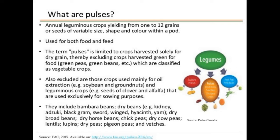Pulses can be used both as food as well as feed. The term pulses is not limited to crops harvested solely for dry grains, thereby excluding crops harvested green for food like green peas and green beans, which are classified as vegetable crops. Also excluded are crops mainly used for oil extraction like soya beans and groundnuts, and leguminous crops like clover and alfalfa used exclusively for sowing purposes.